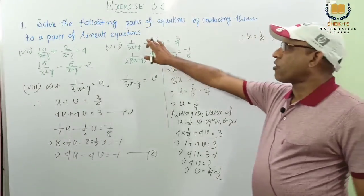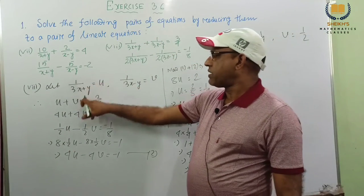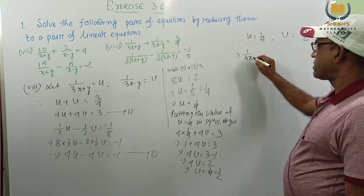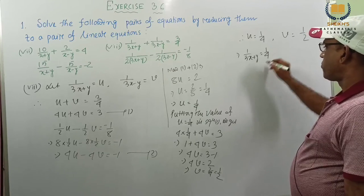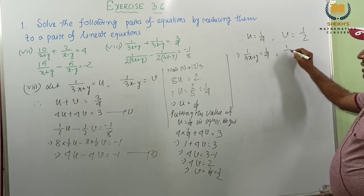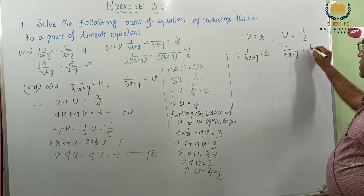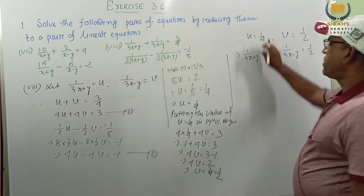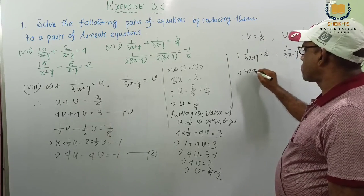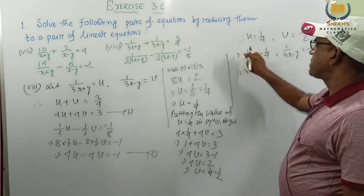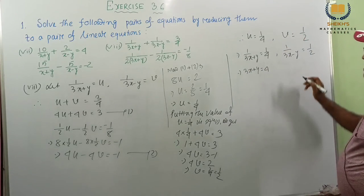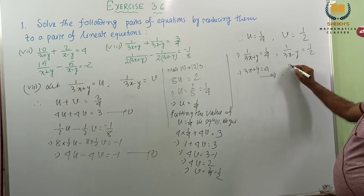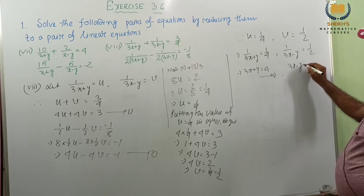Now actually in our problem u and v are not given. U means 1 by 3x plus y, and v means 1 by 3x minus y. Putting the values: 1 by 3x plus y equal to 1 by 4, and 1 by 3x minus y equal to 1 by 2. If we take reciprocal, then 3x plus y equal to 4 — this is equation 3; and reciprocal technique, 3x minus y equal to 2 — this is equation 4.